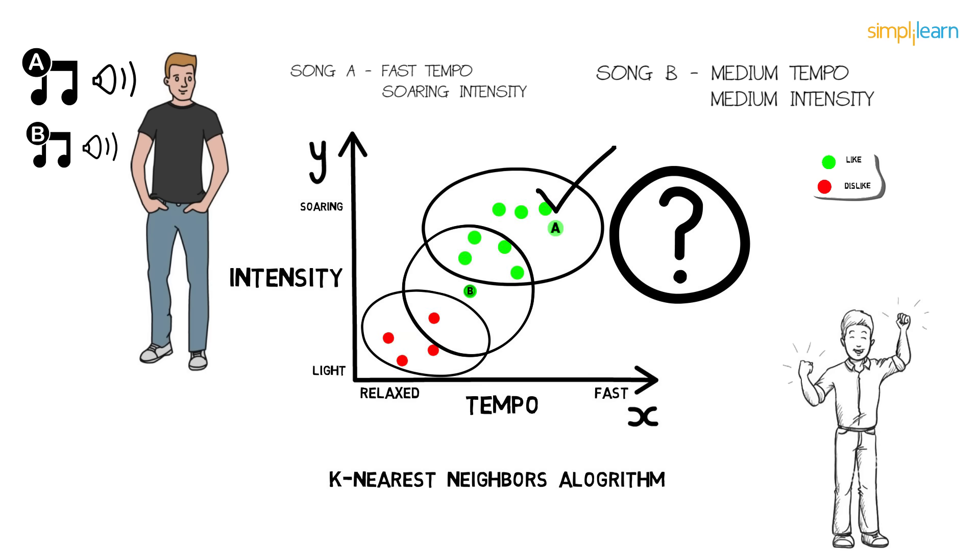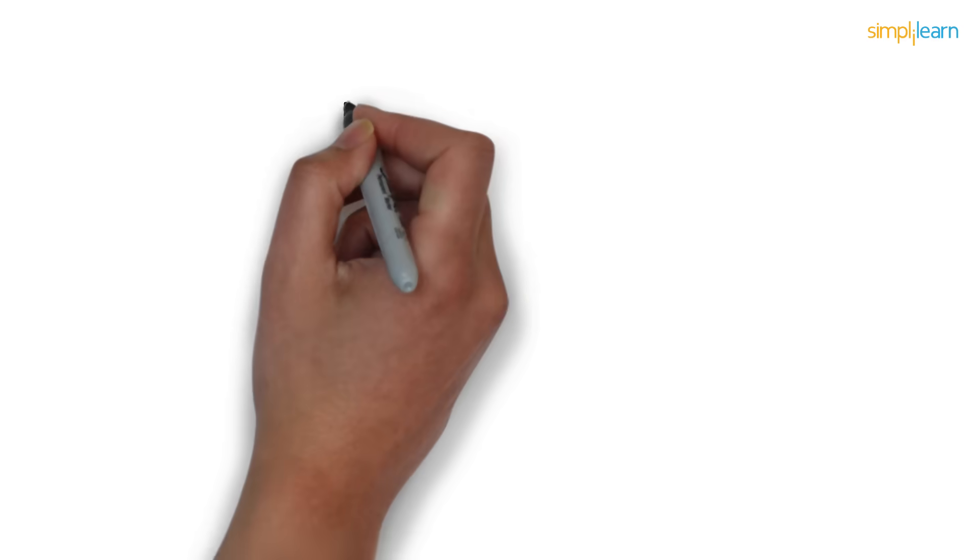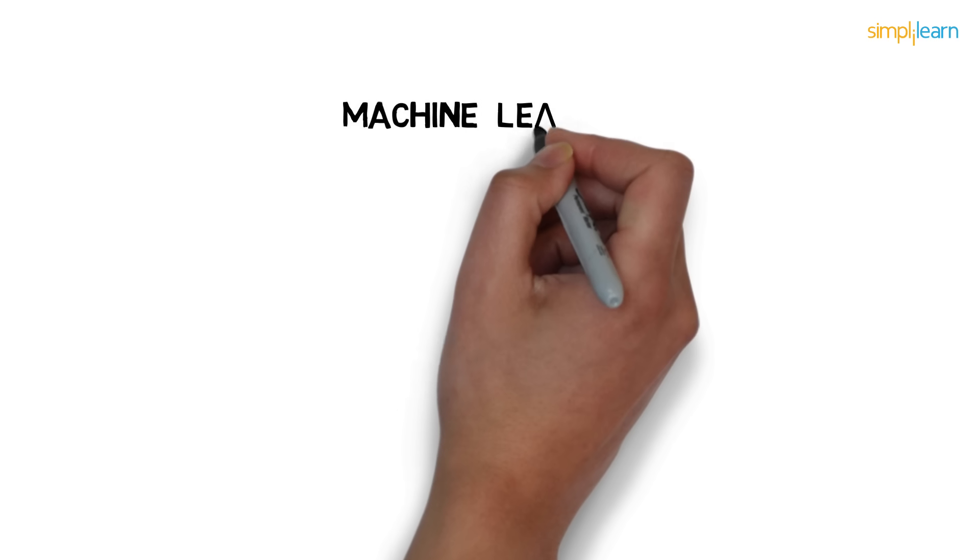But what happens when the choices become complicated? That's when machine learning comes in. It learns the data, builds the prediction model, and when the new data point comes in, it can easily predict for it. More the data, better the model, higher will be the accuracy. There are many ways in which the machine learns.